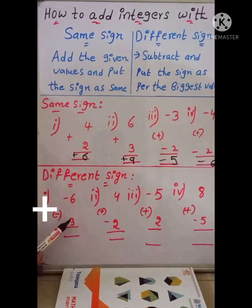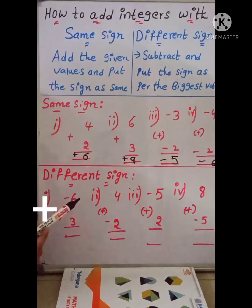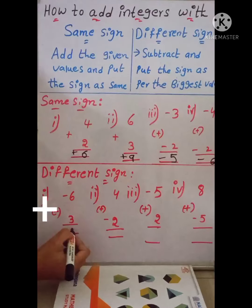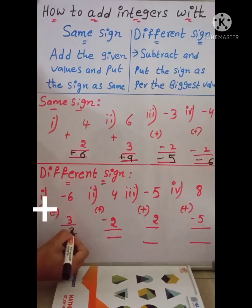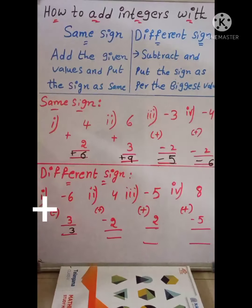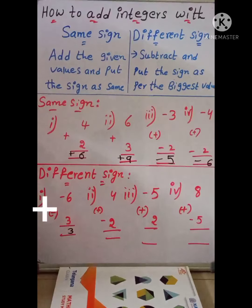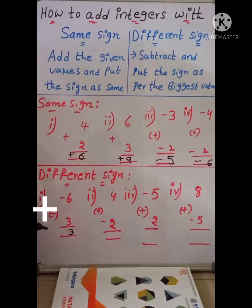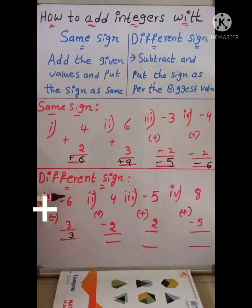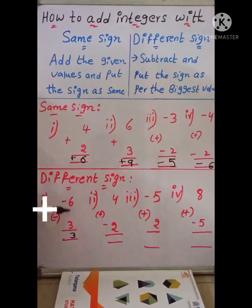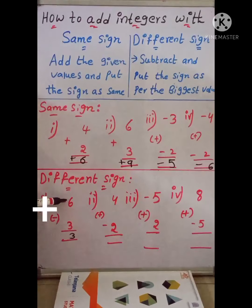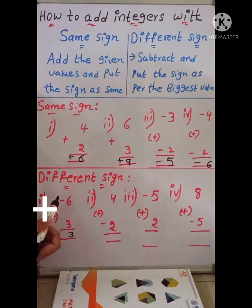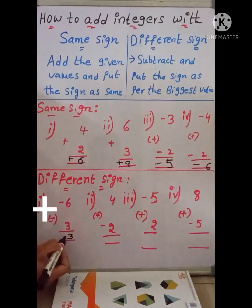Subtract 3 from 6: 6 minus 3 equals 3. What about the sign? Remember, put the sign of the biggest value. What is the biggest value? 6 is the biggest value, and it has the minus sign, so put the sign as minus. The answer is negative 3.